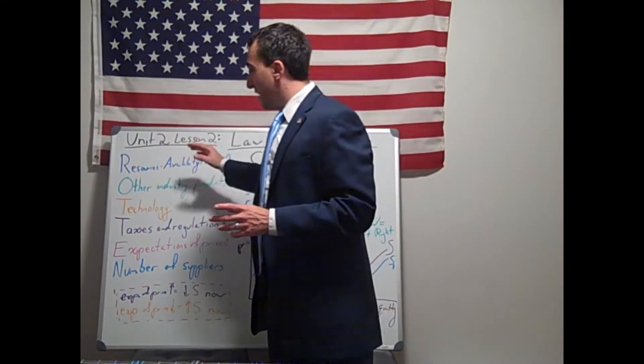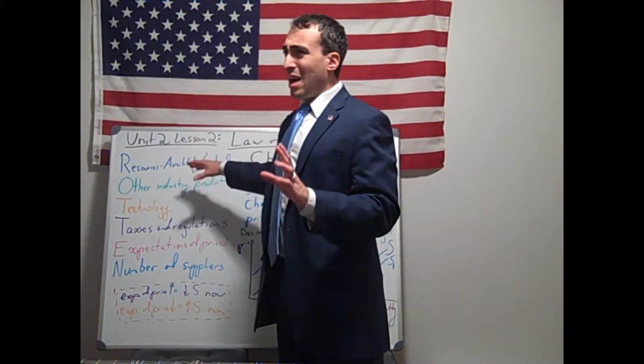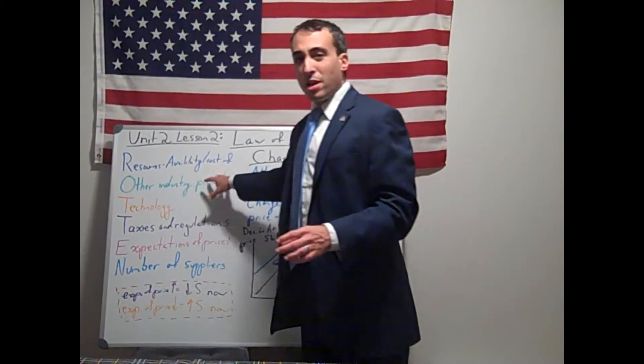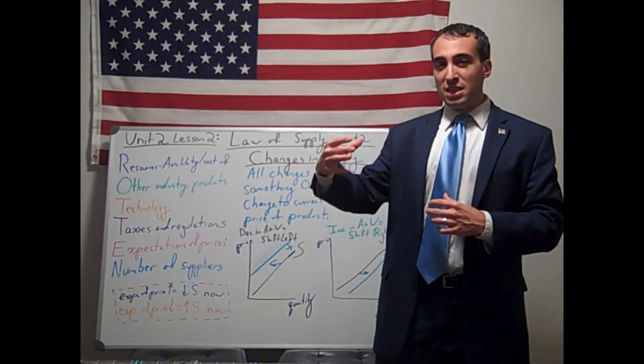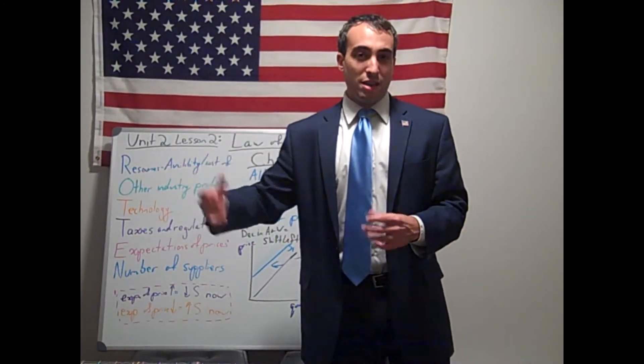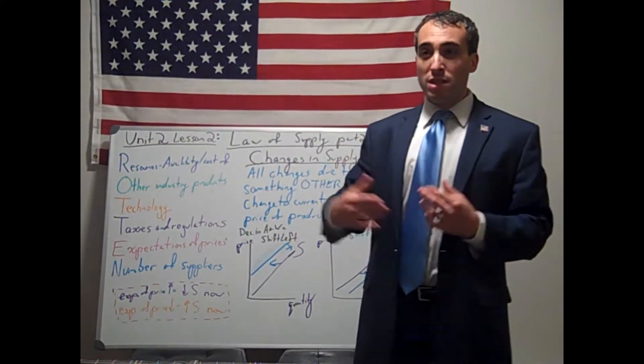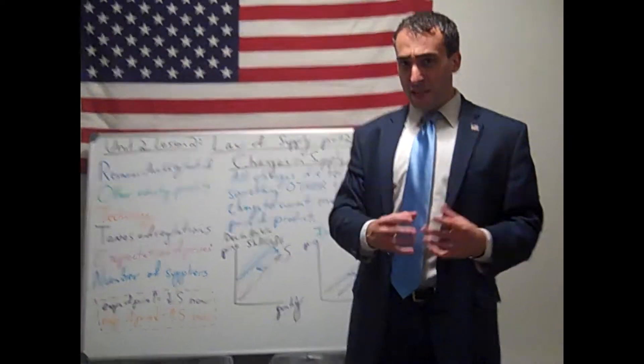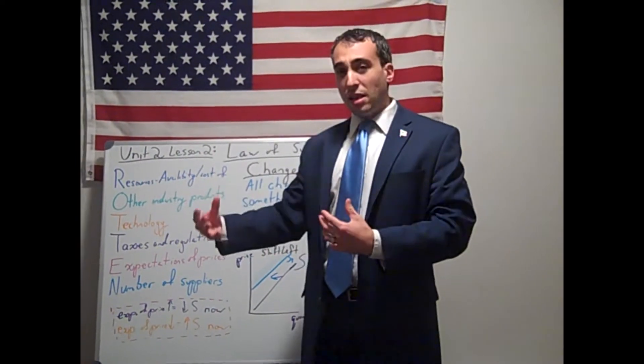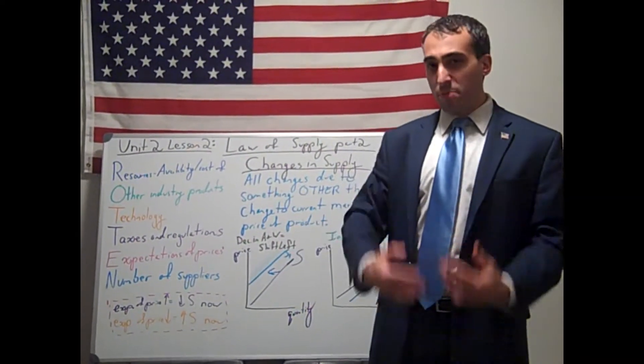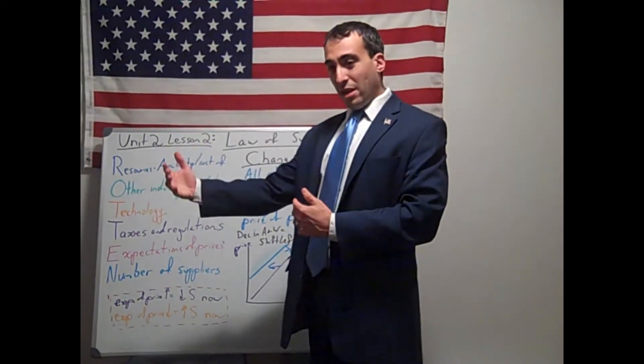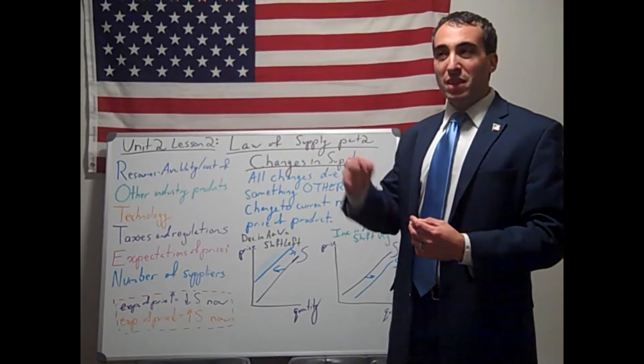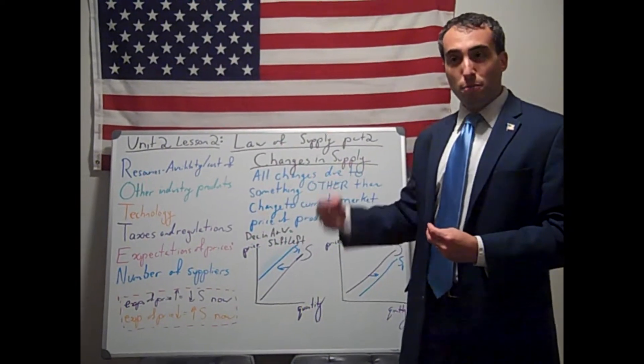O is other industry products. It's confusing. It honestly doesn't appear too much on the AP test, if at all. Other industry products means, like if a business notices that more televisions are selling in the industry, Xbox might say, people are buying televisions, let's increase production of our Xbox systems to go with those televisions. So it's like the complement businesses notice that the complimentary product in the industry is selling, and therefore they'll produce more of them.